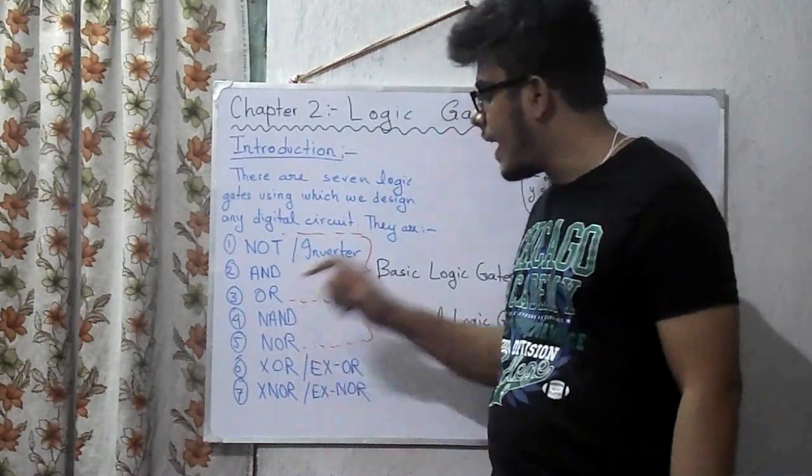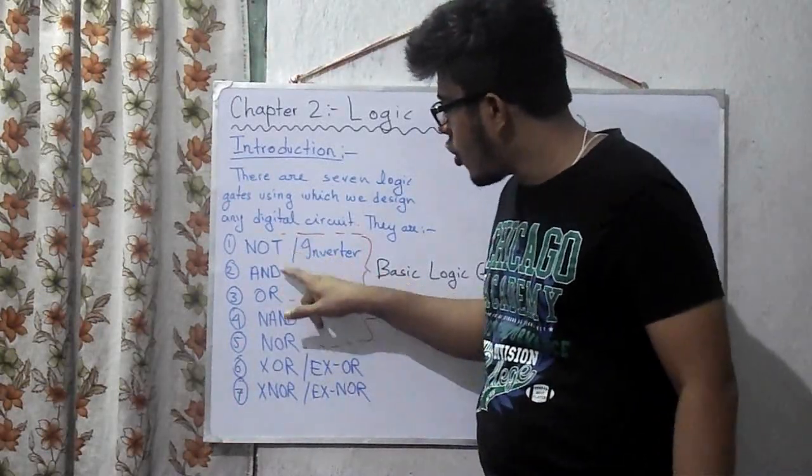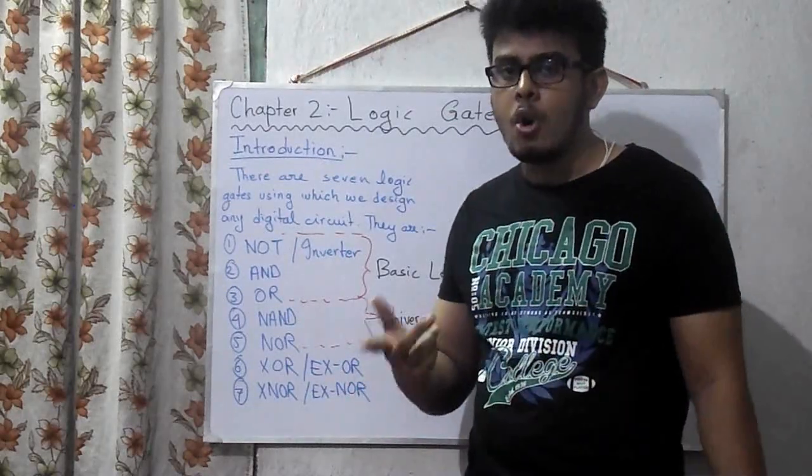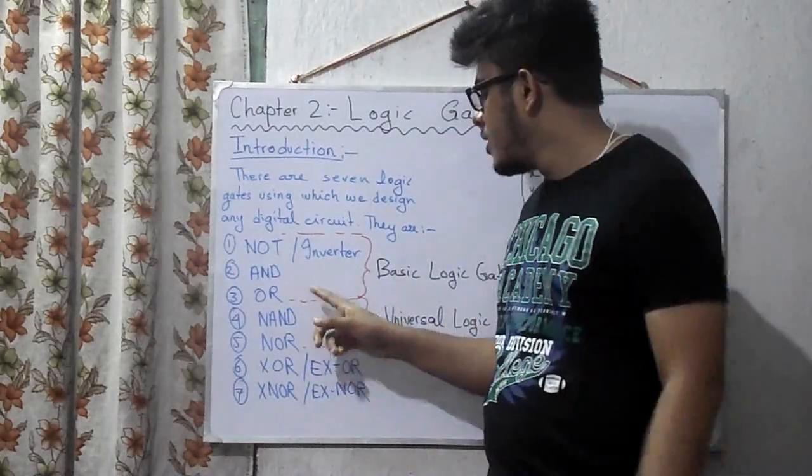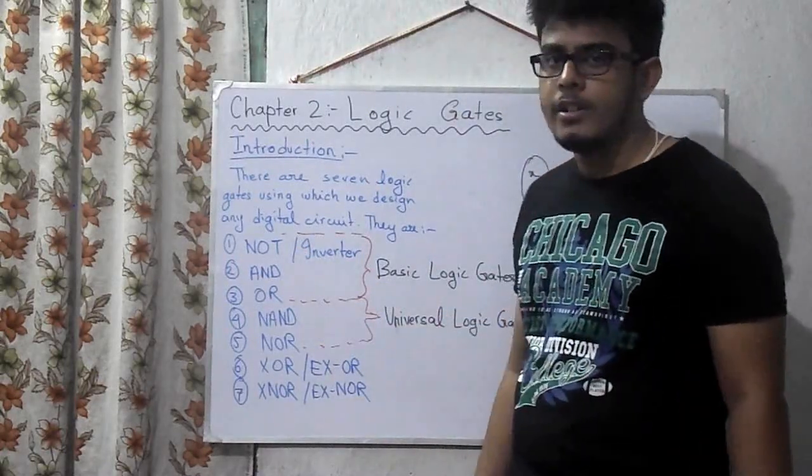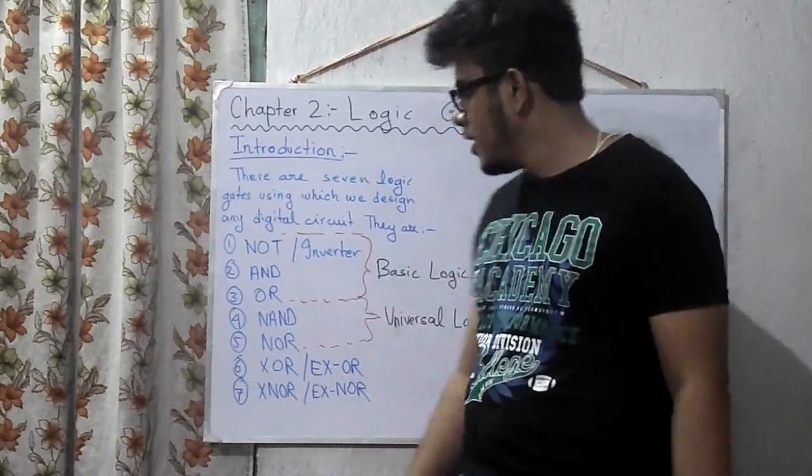You have the NAND gate and the NOR gate. NAND is nothing but NOT of AND gate - you have the AND gate and you just invert it. NOR gate is nothing but NOT of OR gate - you have the OR function and you just invert it.